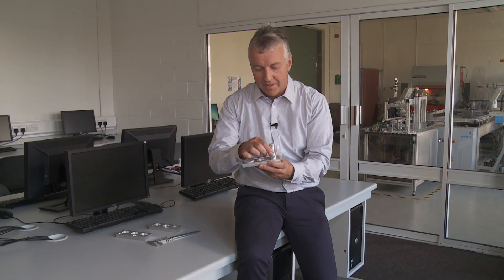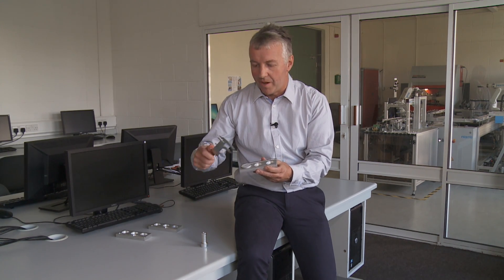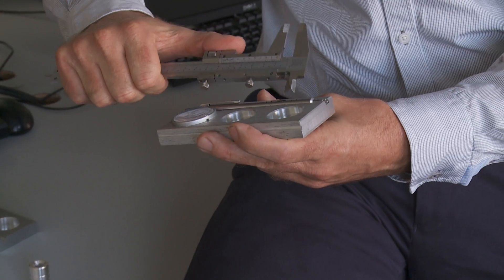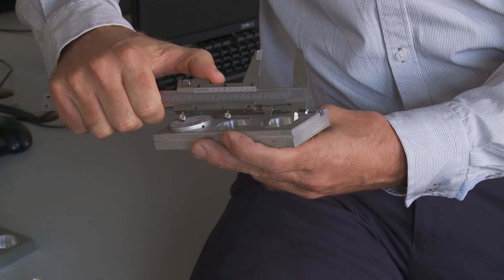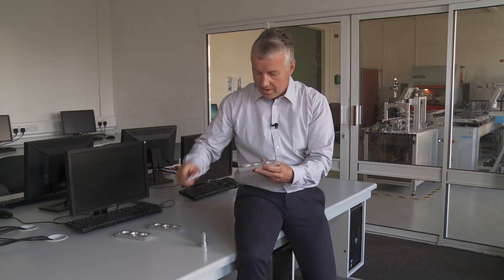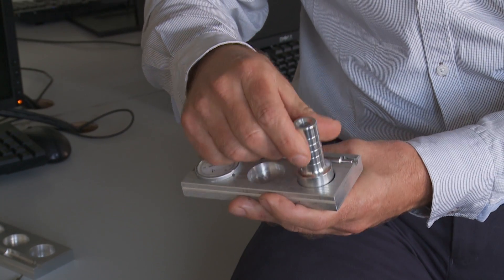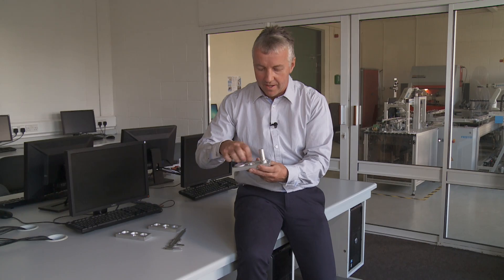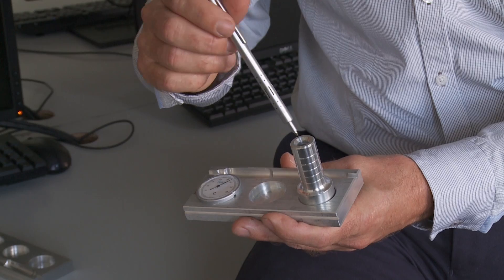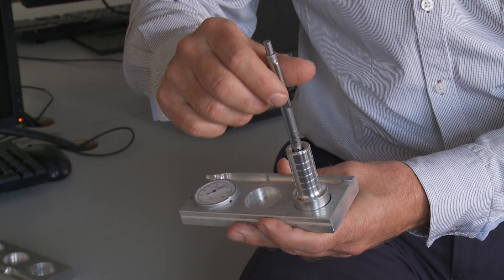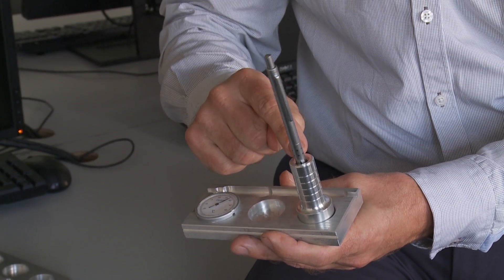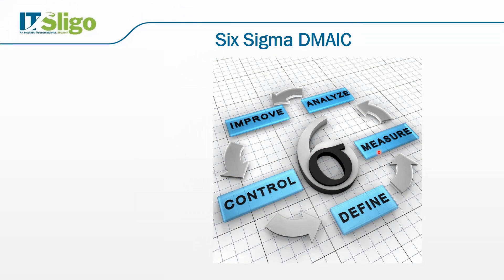For example, in this pen holder, one of the critical to quality parameters is the inside diameter of the space unit. If it's too small, then this part won't fit in. Similarly, the inside diameter of the pen holder — if that's too small, then the pen won't fit in. We will explore these concepts further during the lecture.